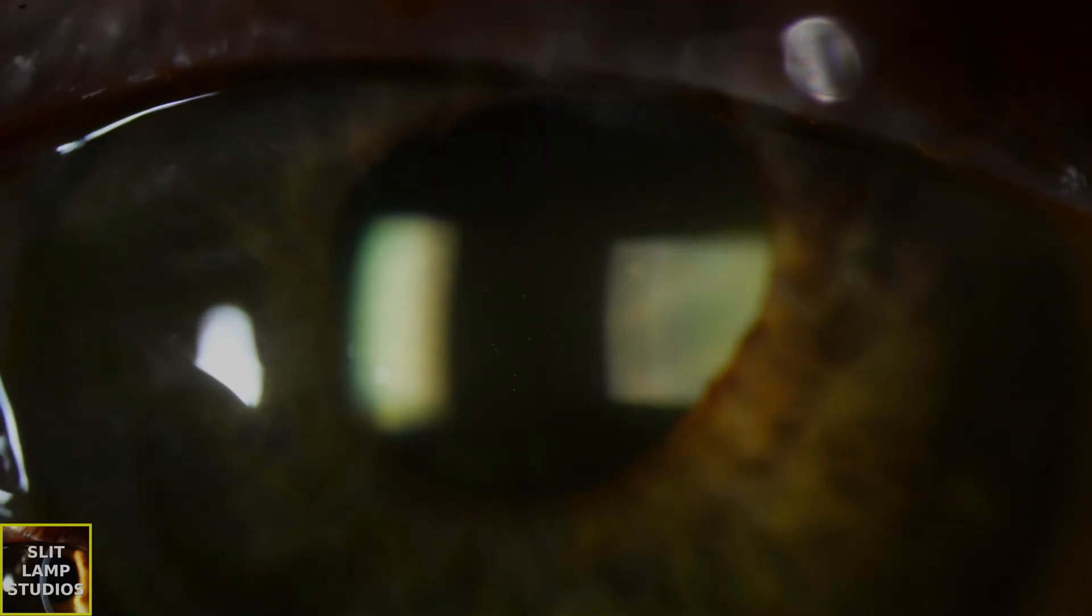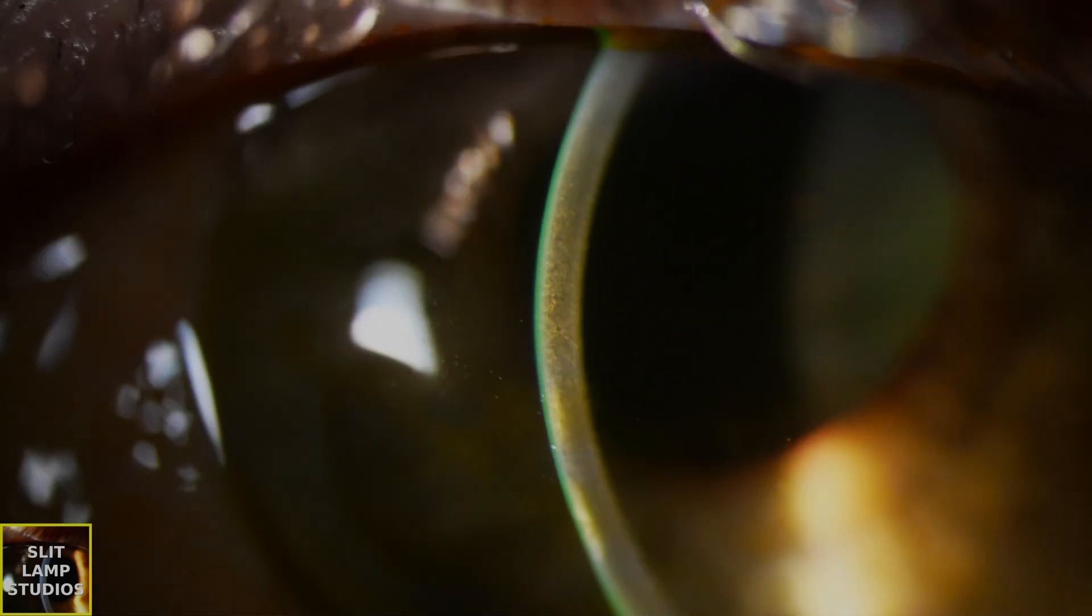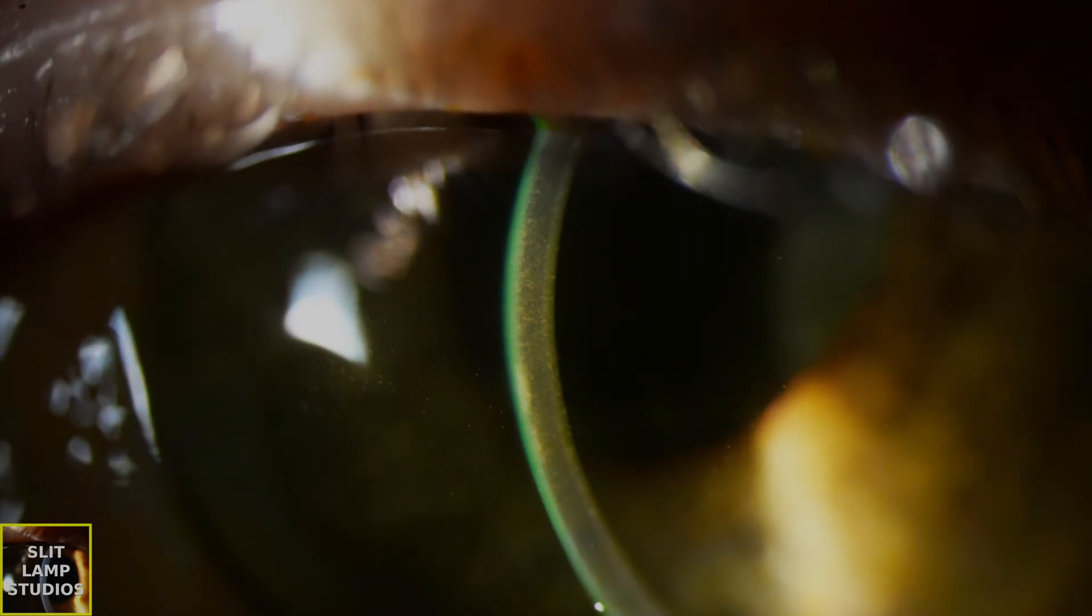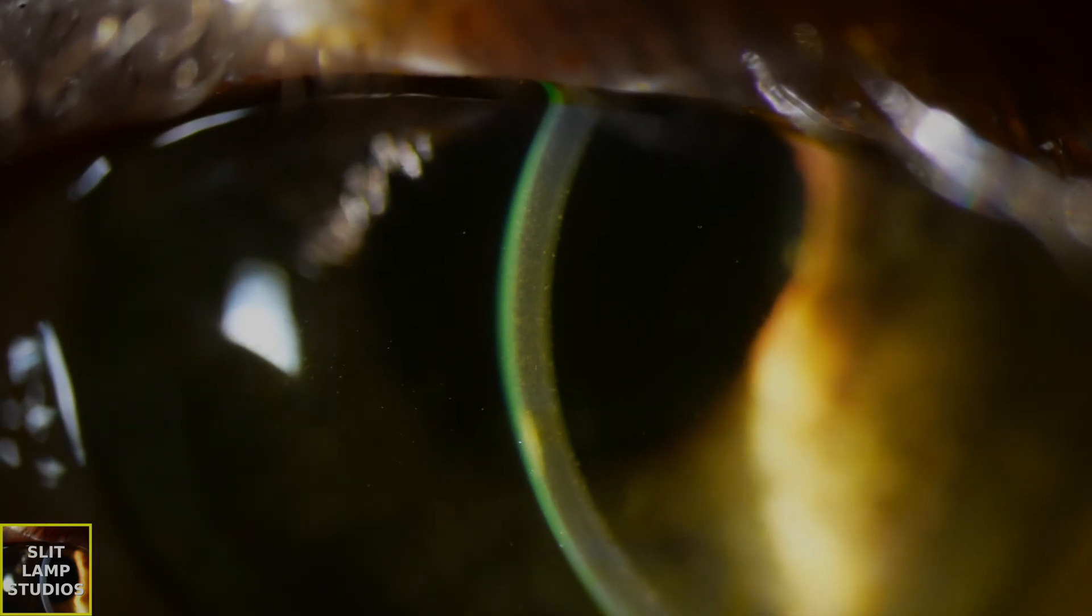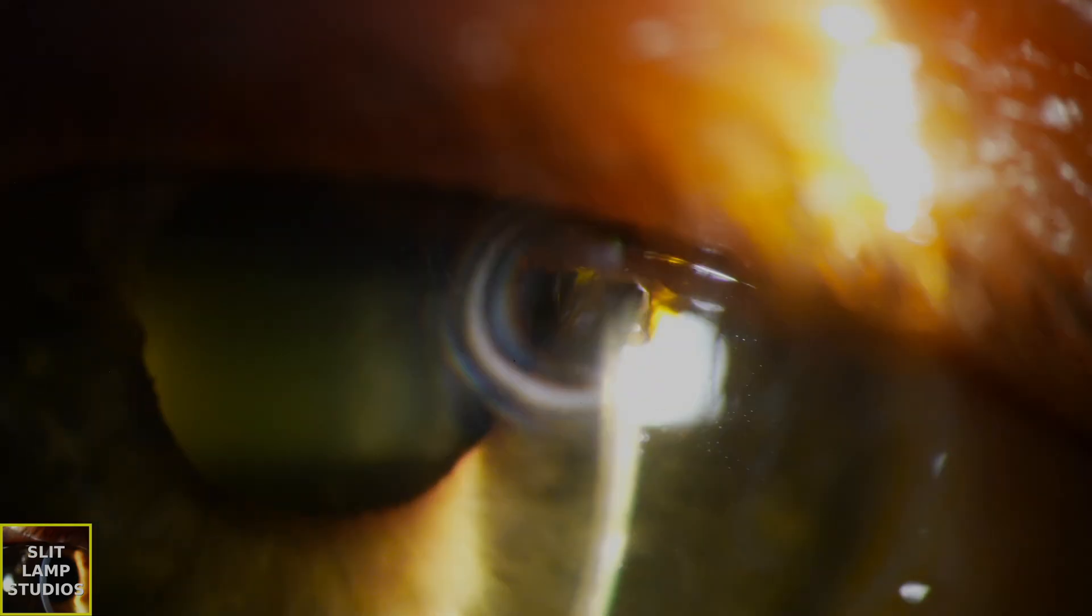So here we can see there is definitely AC inflammation, a good two-plus of cells. Sometimes there might not be that much inflammation. And this patient also has raised intraocular pressure because they've got trabeculitis, inflammation in the trabecular meshwork.